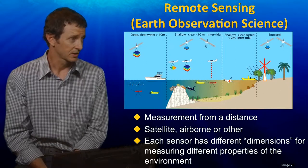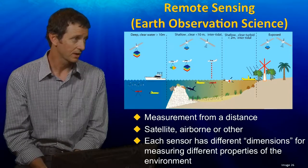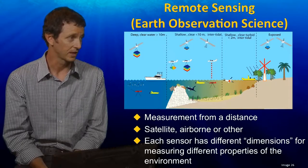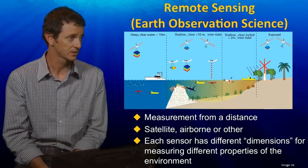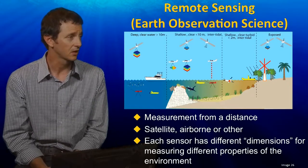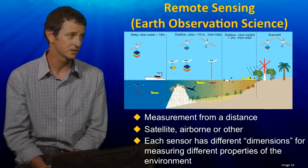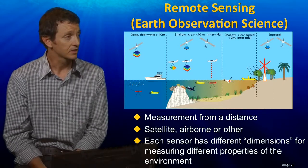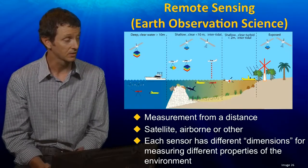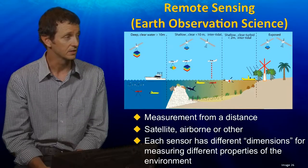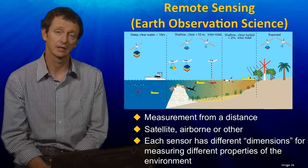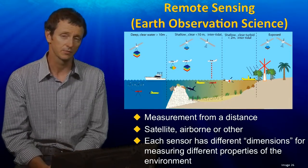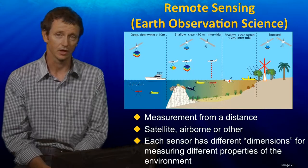If we have a look at coastal environments like the one in the diagram to the right here, there are a number of ways that we can collect information remotely from that environment using Earth Observation Science techniques. As you can see in that diagram, we can put cameras and sensors on a whole range of platforms. Each of the sensors is going to be collecting different types of information depending on the type of sensor and where it is in the environment.